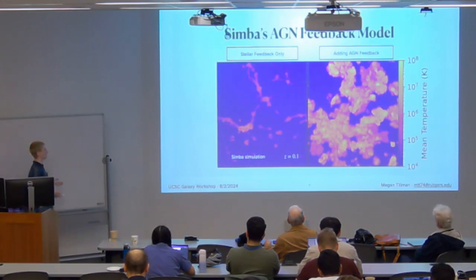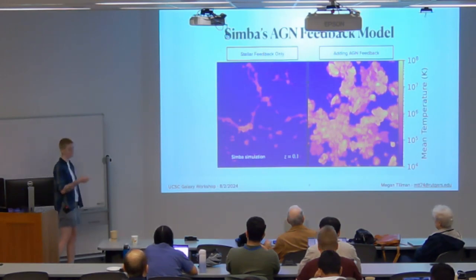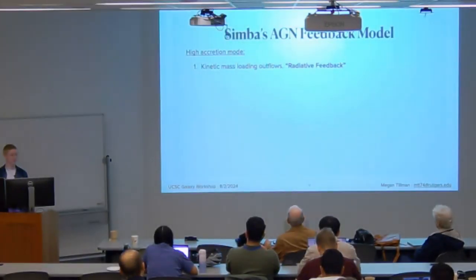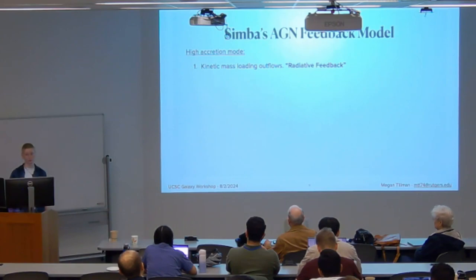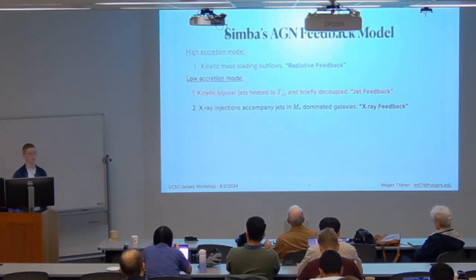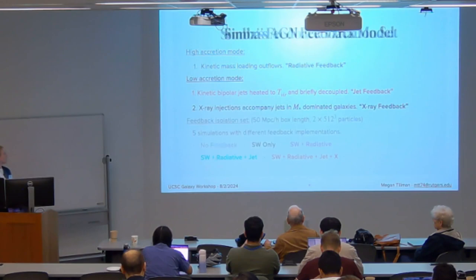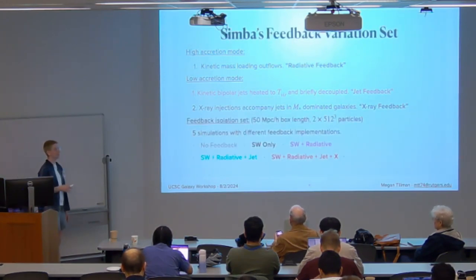Today I'm presenting results from SIMBA. One reason I chose SIMBA is that it has a very dramatic AGN feedback model, making it a nice extreme case for what AGN might be capable of in affecting the Lyman alpha forest and IGM. The feedback model includes a high-accretion-mode kinetic mass outflow known as radiative feedback, and a low-accretion mode with two sub-models: kinetic bipolar jets that are heated and briefly decoupled to prevent artificial dampening, and X-ray injections that accompany jets in stellar-mass-dominated galaxies. The jet feedback is where we see the clearest effects on the Lyman alpha forest.